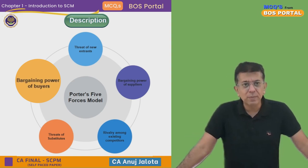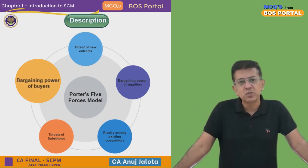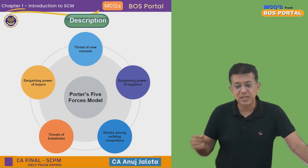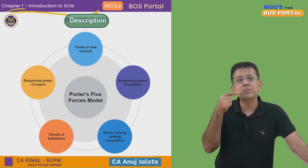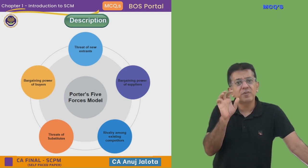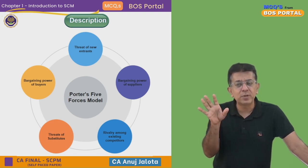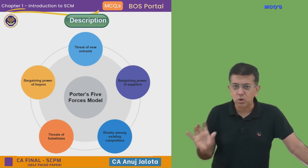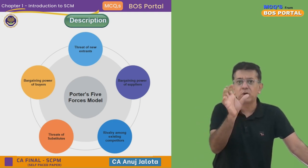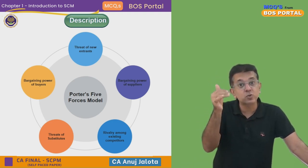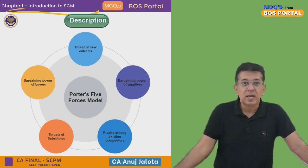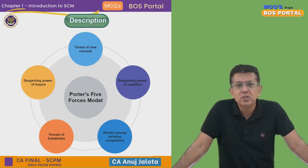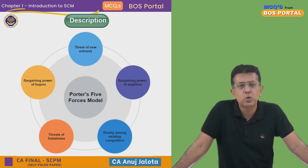Do remember that Michael Porter's Five Forces model is very dynamic in nature. Dynamic means it constantly keeps changing — today there are five competitors, tomorrow there might be six, and automatically this model will start showing six competitors. Similarly, bargaining power of suppliers and buyers might change depending on the competition and so on.